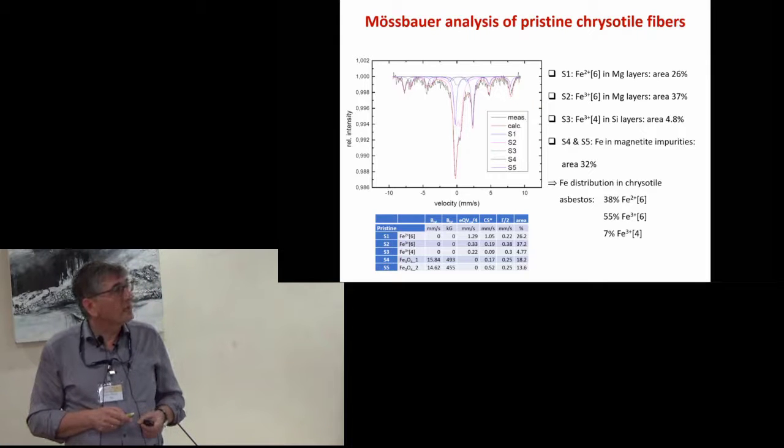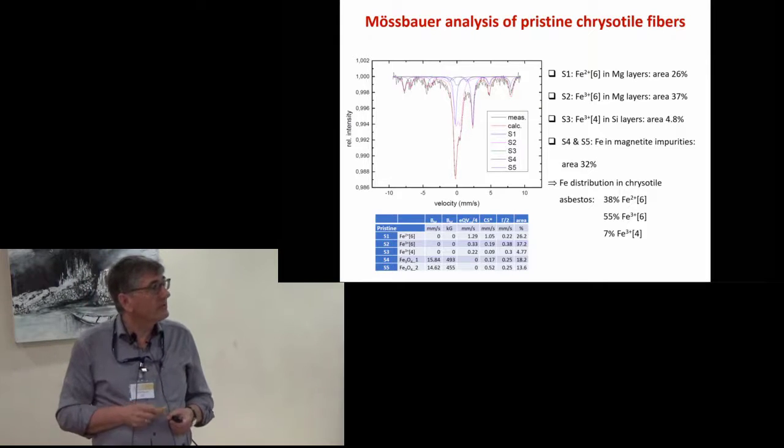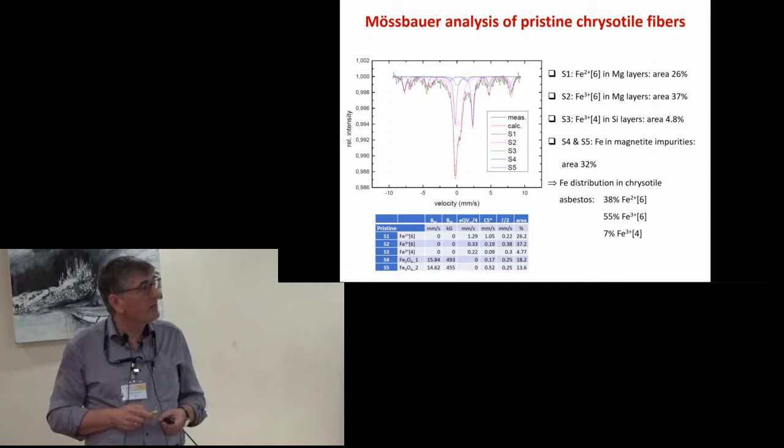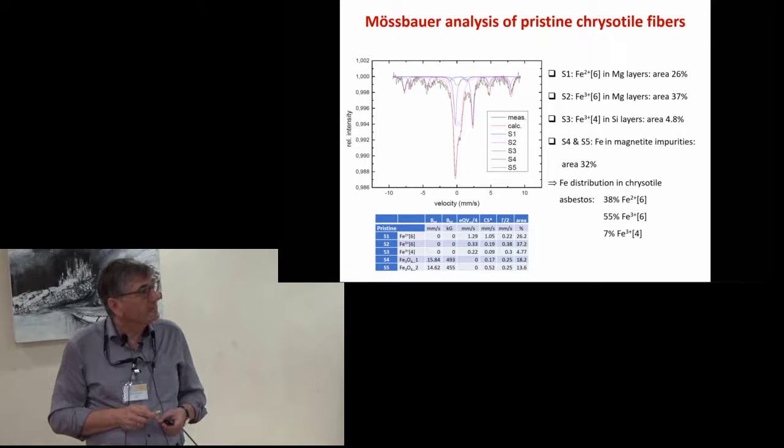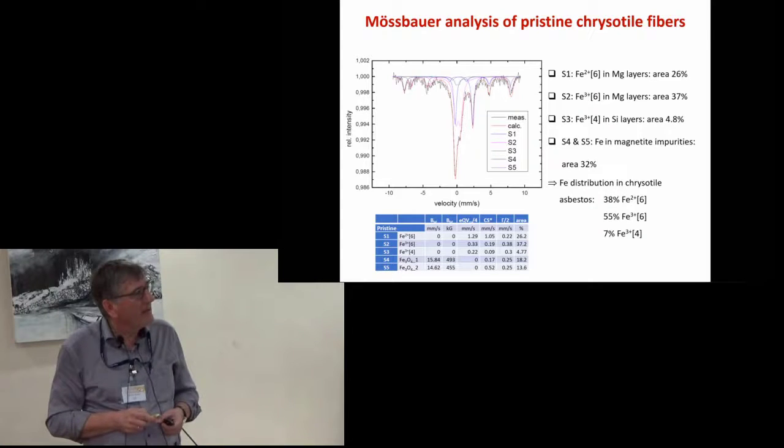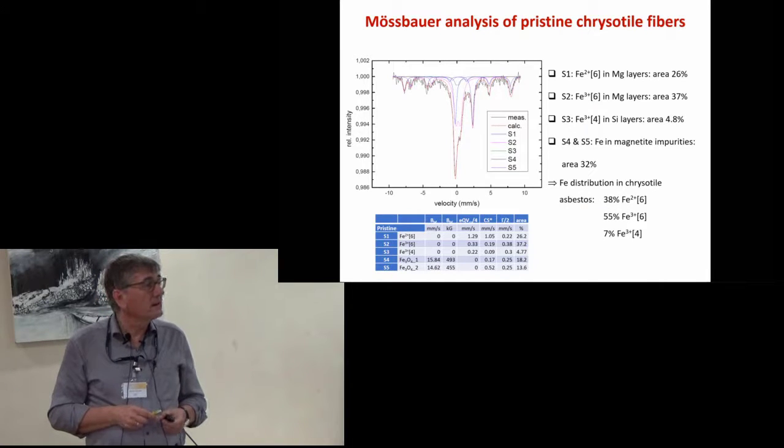In the pristine chrysotile fibers we found three different iron species. By Mössbauer analysis: 26% ferrous and 37% ferric iron in the octahedral magnesium layers, and ferric iron in tetrahedral places in the silicon layers. 32% of all iron atoms are in magnetite impurities, which according to x-ray investigations is approximately 2% of the whole chrysotile material.